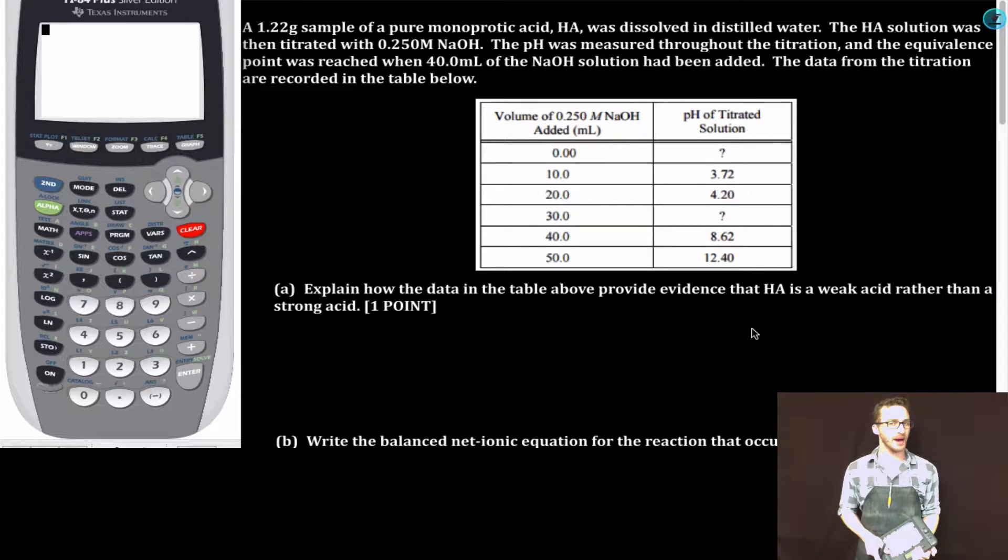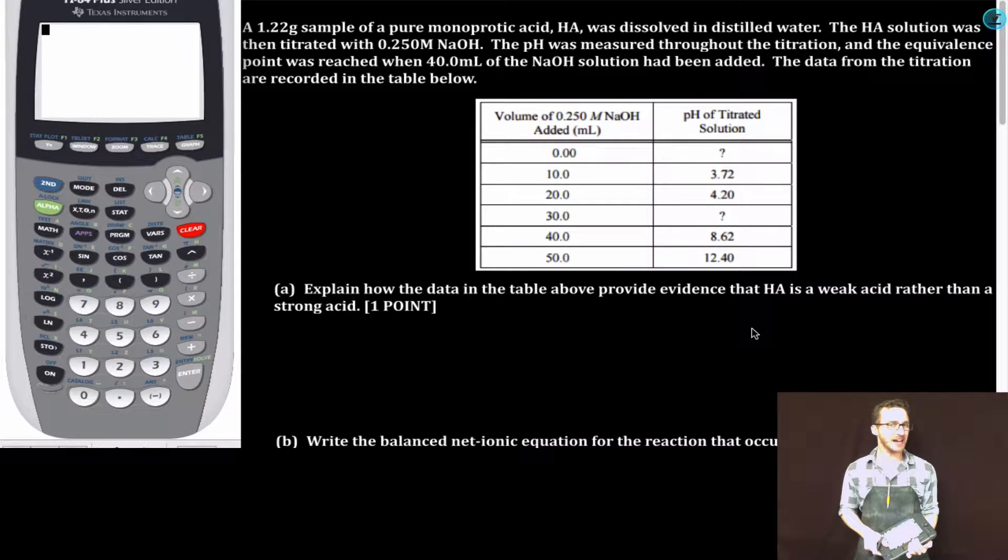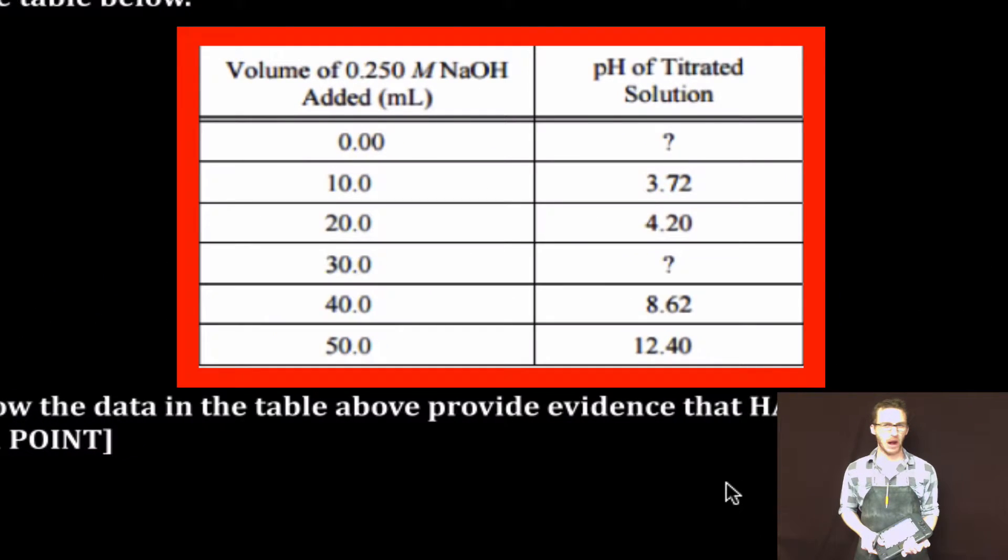A 1.22 gram sample of a pure monoprotic acid HA was dissolved in distilled water. The HA solution was then titrated with 0.250 molar sodium hydroxide. The pH was measured throughout the titration and the equivalence point was reached when 40.0 milliliters of the sodium hydroxide solution had been added. The data from the titration are recorded in the table below.